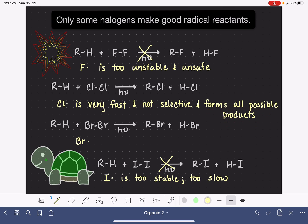The bromine radical, which is just a little bit larger than the chlorine radical, is not super fast. So it is slow enough to have selectivity.